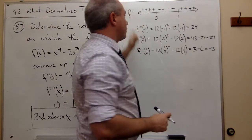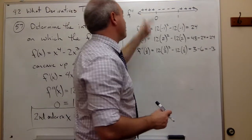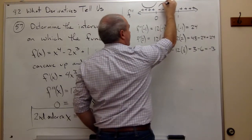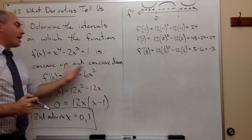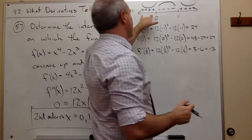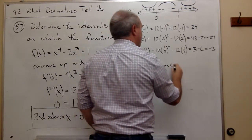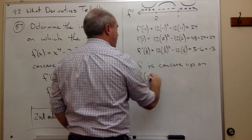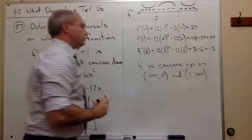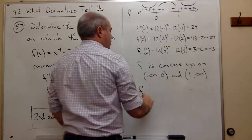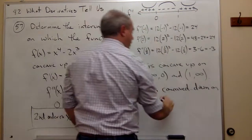Remember, we're dealing with the second derivative now, not the first derivative. So this tells us about concavity. When I have positive values, the function is concave up. When I have negative values, the function is concave down. So f is concave up on two intervals: from negative infinity to 0, and from 1 to positive infinity. Also, f is concave down on just the interval from 0 to 1.